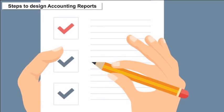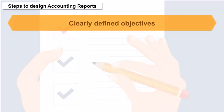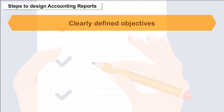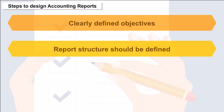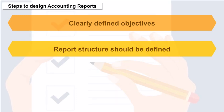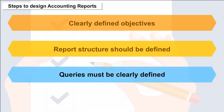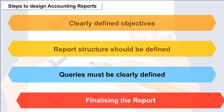Steps to Design Accounting Reports: the objective for which the report is being created must be clearly defined, including who will use the report and what decisions will be taken based on it. The structure of the report is to be defined — what information the report will contain and the style of presentation. Accounting queries must be clearly defined, along with the methodology to be adopted while interacting with the database, before finalizing the report.